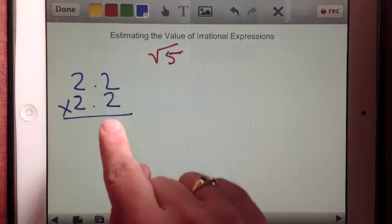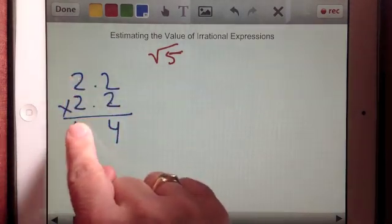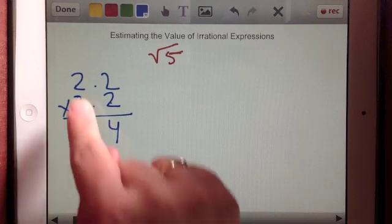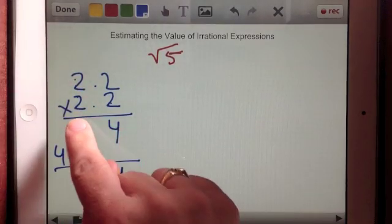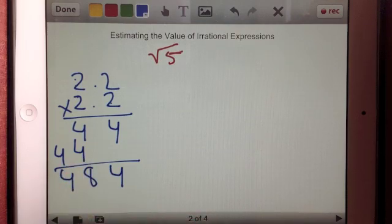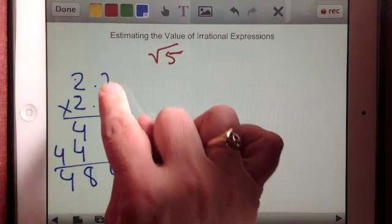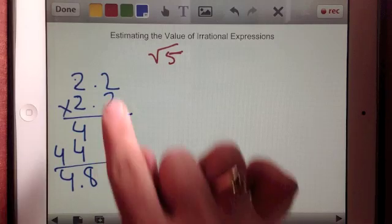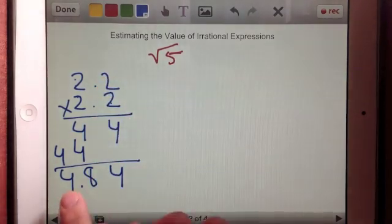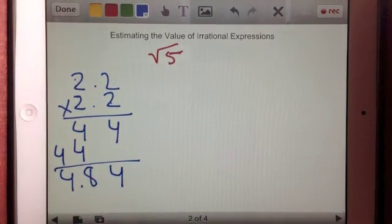what I would get is 2 times 2 is 4, 2 times 2 is 4, 2 times 2 is 4, add those up, 4, 8, 4, and I have 2 digits, the decimal point goes there, 4.84 is what I would get if I multiplied 2.2 by itself. 4.84 is closer to 5 than 4 was when I just did 2 times 2, but it's still not quite at 5,